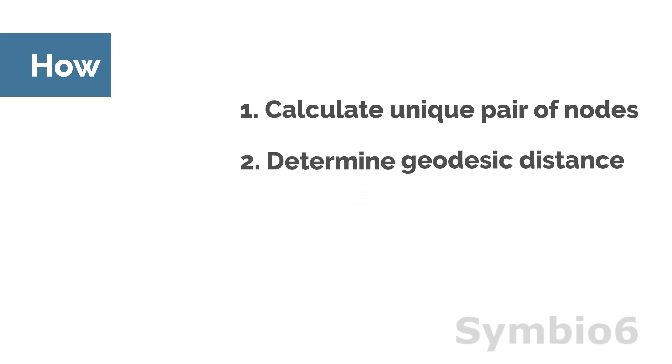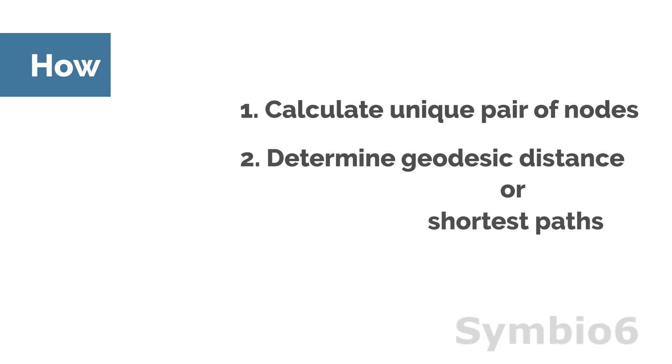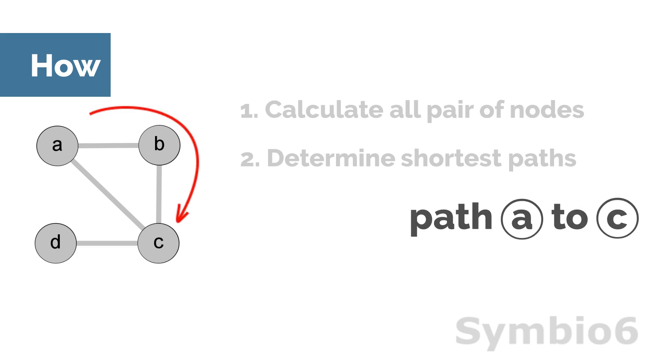Betweenness centrality uses the geodesic distance or shortest paths between all pairs of nodes in a network to calculate the bridgeness. The shortest path between two nodes goes through the fewest links.